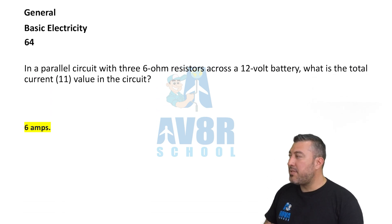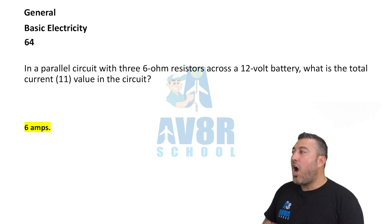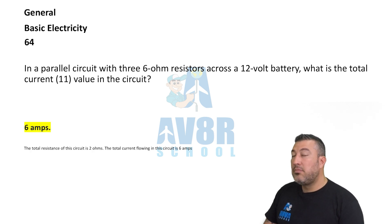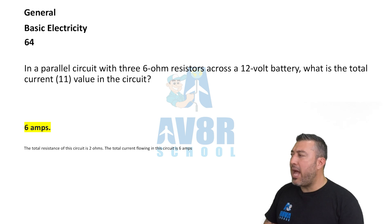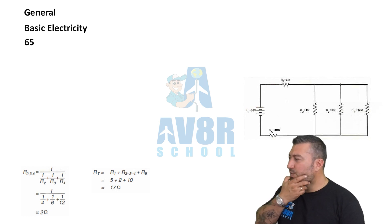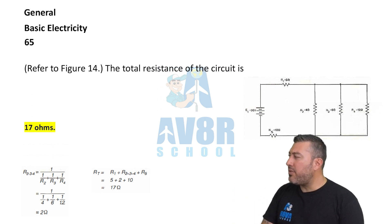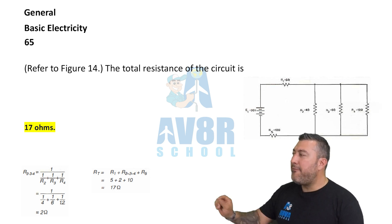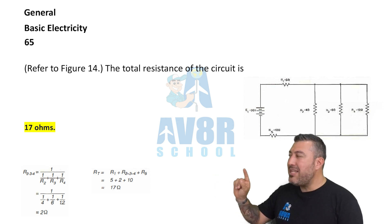64: In a parallel circuit with three 6-ohm resistors across a 12-volt battery, what is the total current value in the circuit? 6 amps. 65: Refer to figure 14 — the total resistance of the circuit is 17 ohms.